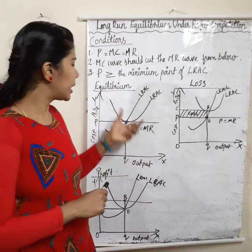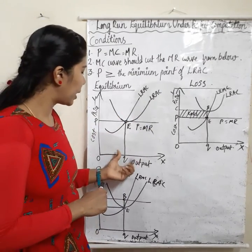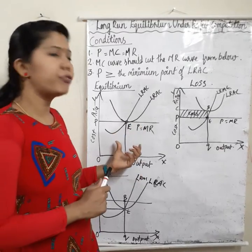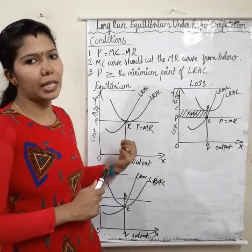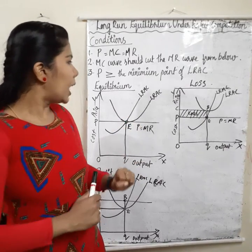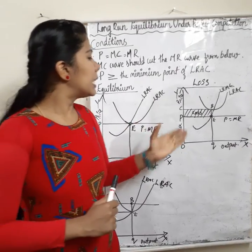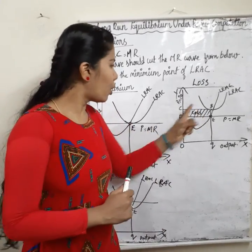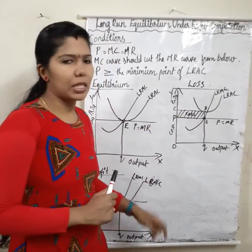This is long run equilibrium under perfect competition — this is the perfect figure for that. Now we can learn two situations: loss and profit.